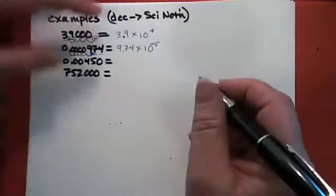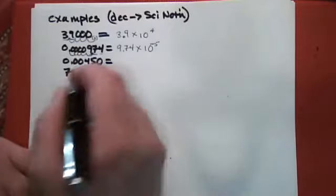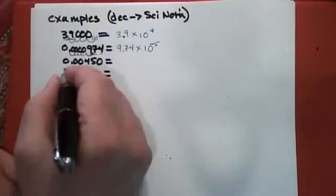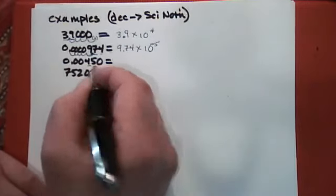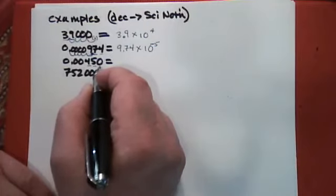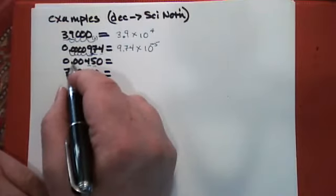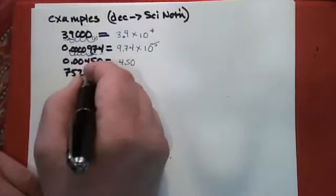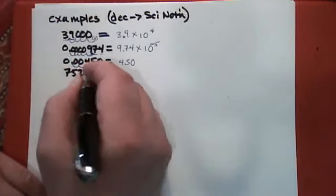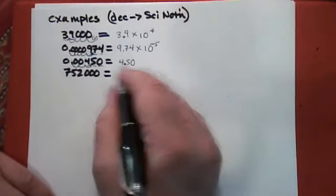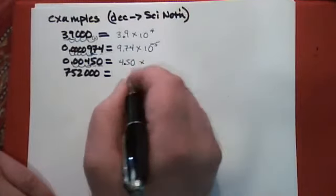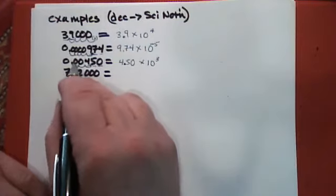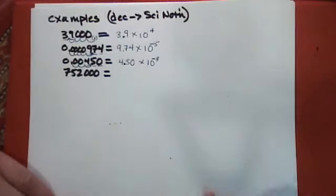Remember: big numbers have positive exponents and small numbers have negative exponents. Here's another small number, 0.00450, so you'd expect a negative exponent. Checking significant figures: zeros at the beginning don't count, the four and five obviously count, and the zero at the end counts because there is a decimal point in the number. That's three significant figures. We move the decimal point three spaces to get a number between 1 and 10, leaving us with 4.50. We multiply by 10 to the power of spaces moved, but since moving the decimal made the number bigger, that's negative three. So it's 4.50×10⁻³.